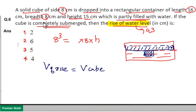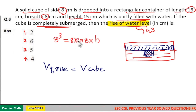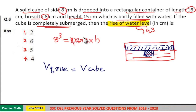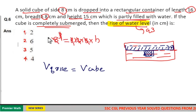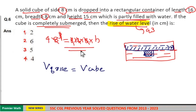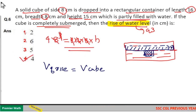We have 8³ = 16 × 8 × h. Writing 16 as 8 × 2, the 8² terms cancel, leaving 8 = 2 × h, so h = 4. The answer is 4 centimeters.